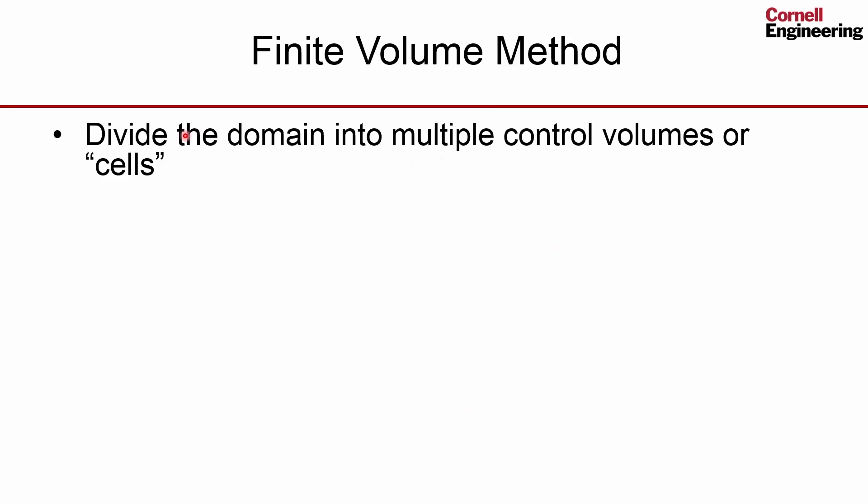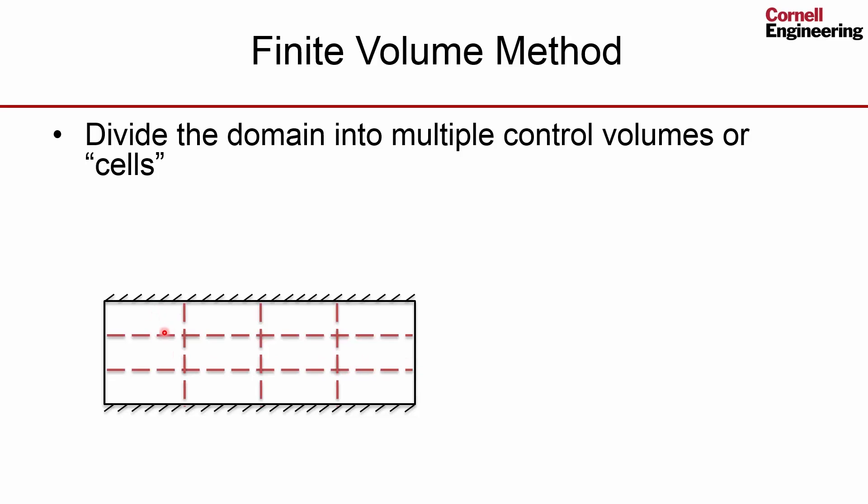The first step is to divide the domain into multiple control volumes or cells. So you take the solution domain and divide it into little chunks. These are called cells, or each one of these is called a cell in the finite volume method.